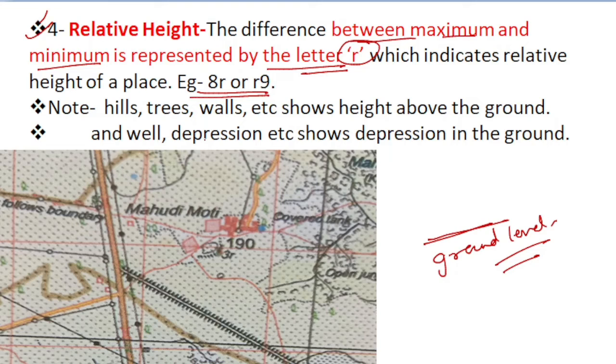For example, you see it is written beside the hill. Suppose this is r3 and this symbol represents an embankment. Embankment is the arrangement made to prevent the spreading of water during floods or other occasions.